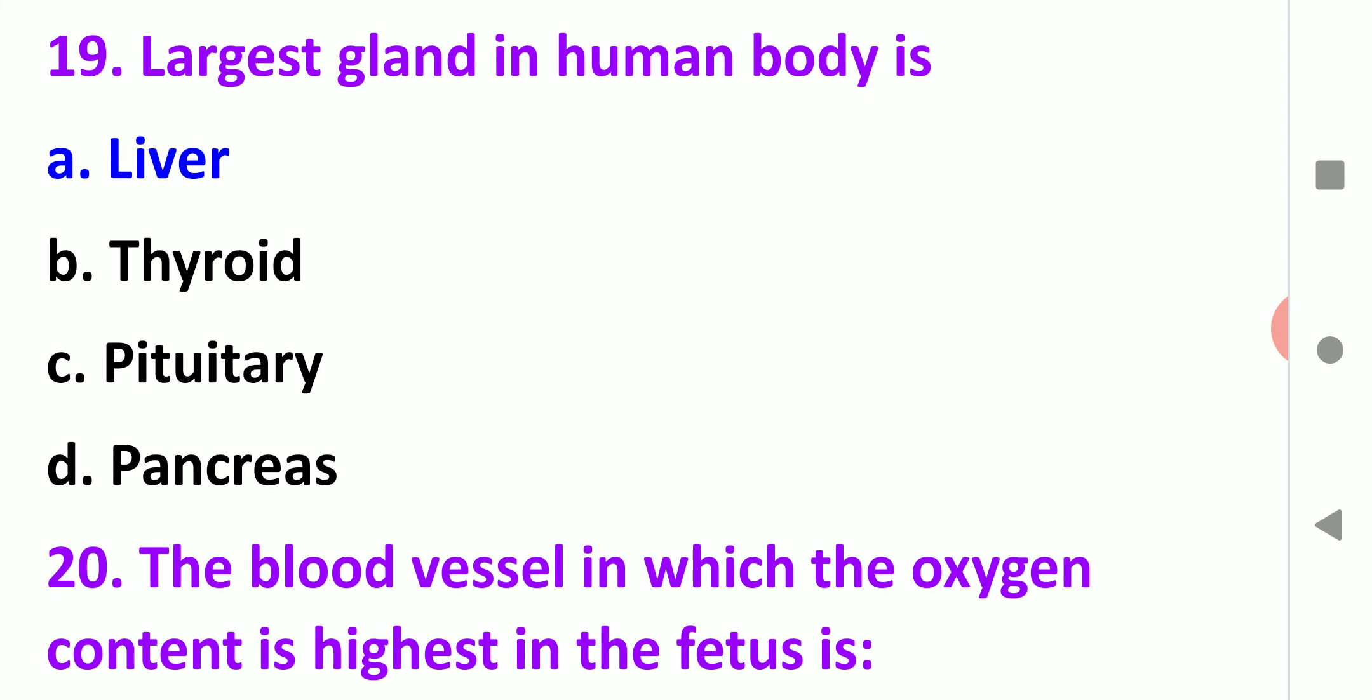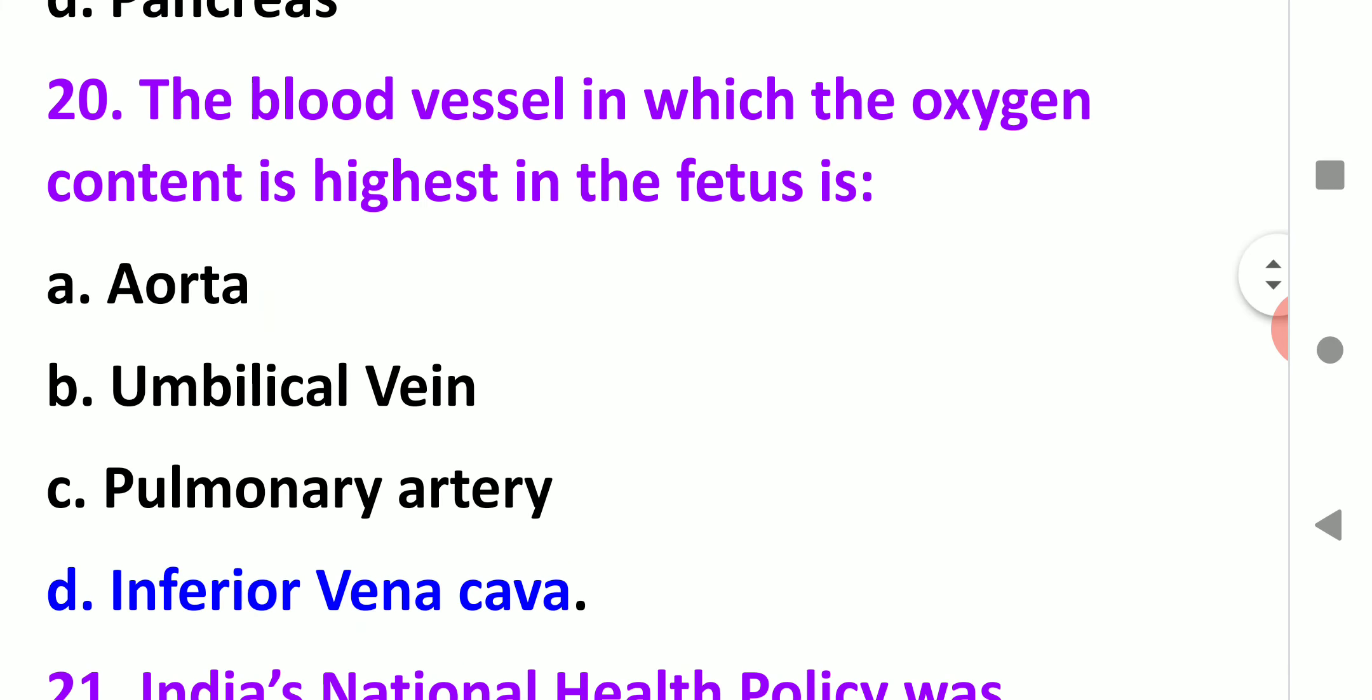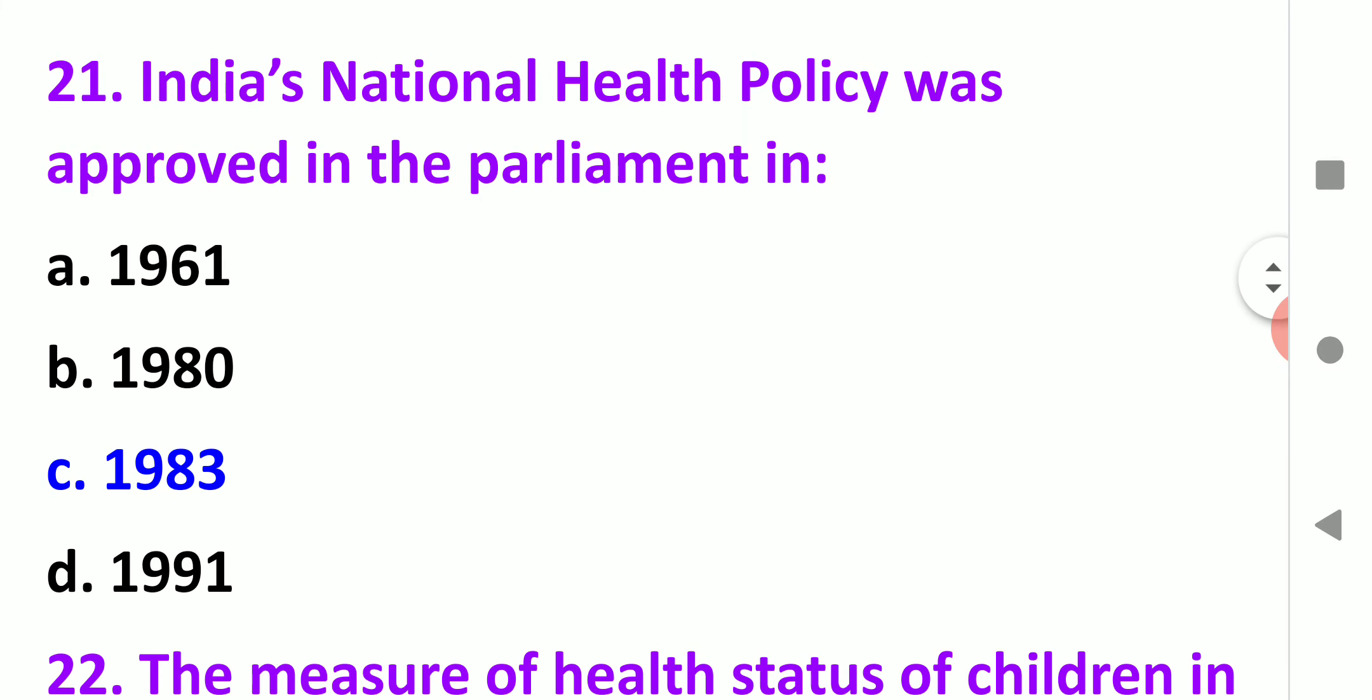Next, the largest gland in the human body is the liver. When it is asked internal organ, then you will write liver. The blood vessel in which the oxygen content is highest in the fetus is the umbilical vein. India's National Health Policy was approved in parliament in 1983, and there were changes in 2017.